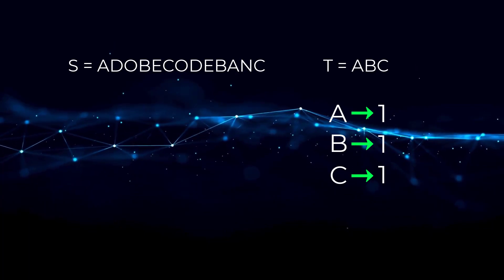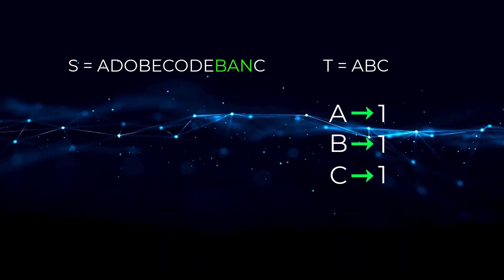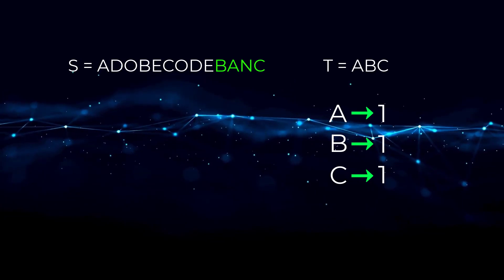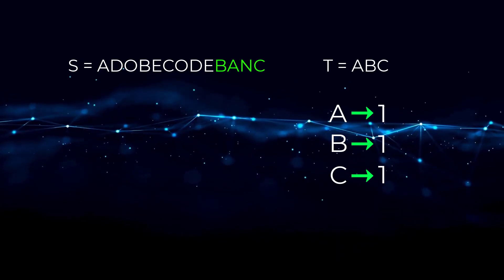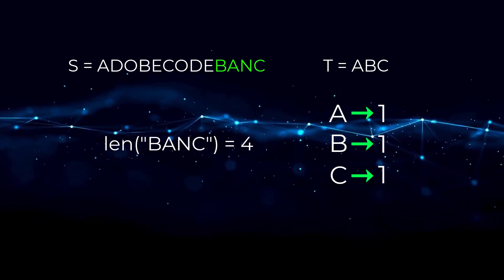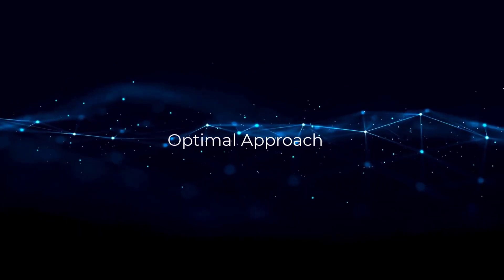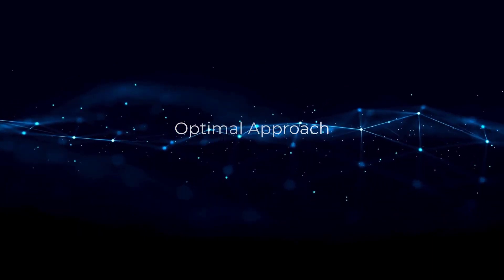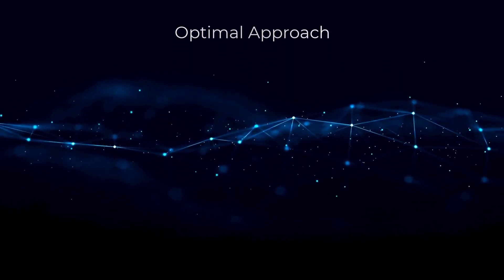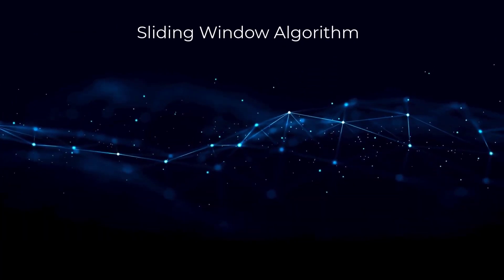Looking at these smaller substrings, B, A, and C would be the minimum window substring since it has a length of four, which is the smallest. Now that we understand what the problem is asking, let's jump into the approach to solve this, which is a sliding window algorithm.